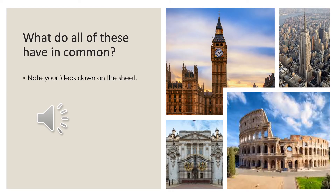Here we have some pictures of different buildings, and I want you to think about what you think they all have in common. Note it down — it might link to some of the words we've been looking at at the start of this lesson. Jot them down onto the sheet, or if you don't have a printer, just write them down onto a piece of paper. Any ideas about what they all have in common? Any similarities?